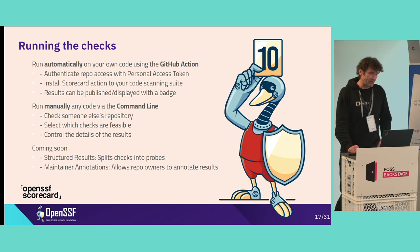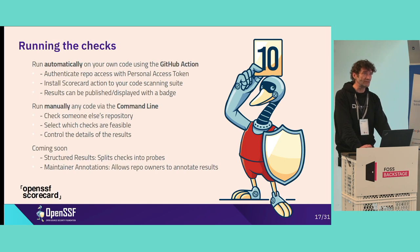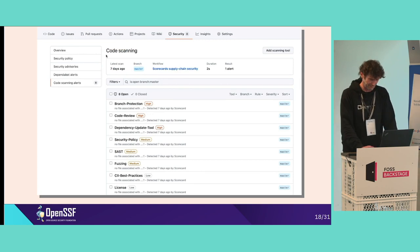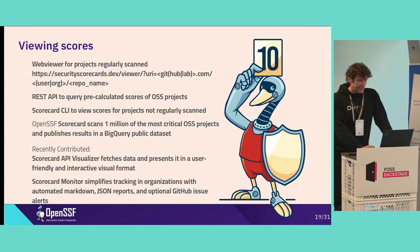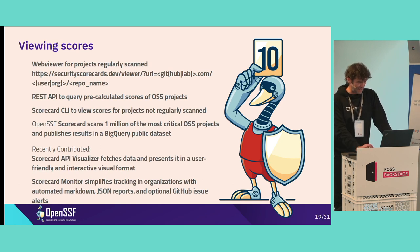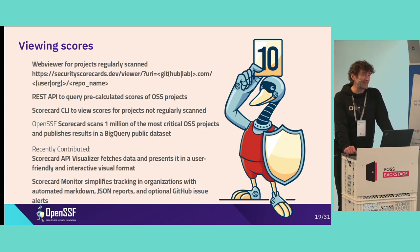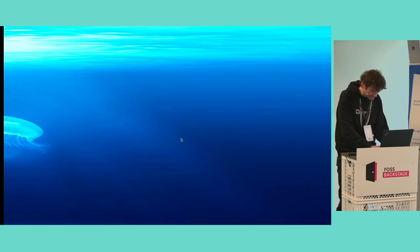So how can the scorecard be used? You can use it as a GitHub Action — just put that into the security scanning tab. As a user, you can use the WebViewer, which is a URL that contains the repository, with GitHub and GitLab supported at the moment. There is also a REST API and a command-line interface. What recently came out and is really nice, especially for the use case I describe here, is a visualizer for the API — I can actually show that.